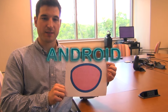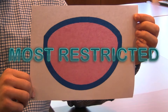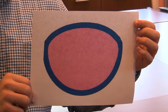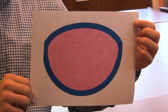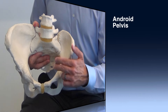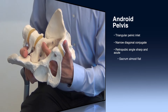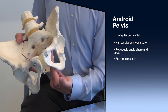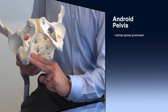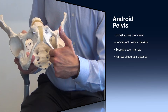The android pelvis is present in approximately 25% of women. It is the most restricted of all pelvic types, owing to the limited space at the inlet and the progressive funneling of the mid-pelvis and pelvic outlet. Arrested descent is most commonly seen at the level of the mid-pelvis. On clinical pelvimetry, the pelvic inlet is triangular in shape, the diagonal conjugate is narrow, and the retropubic angle is sharp and acute. The sacrum is almost always flat or minimally curved, the ischial spines are prominent, the pelvic sidewalls are convergent, the subpubic arch is narrow, as is the bituberous distance.